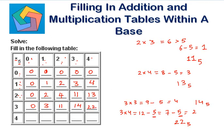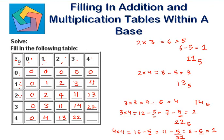4 times 0 is 0. 4 times 1 is 4. 4 times 2 is 8, and 8 in base 5 is written as 13. 4 times 3 is 12, and 12 in base 5 is written as 22. 4 times 4 is 16. 16 minus 5 is 11, 7 minus 5 is 6, 6 minus 5 is 1. We have subtracted 5 three times, so this is 31 to the base 5. This is how we complete our multiplication table.